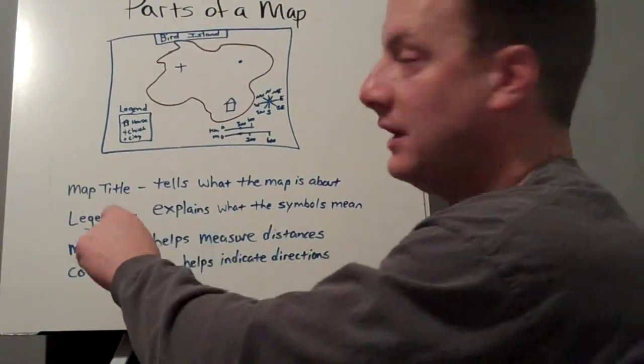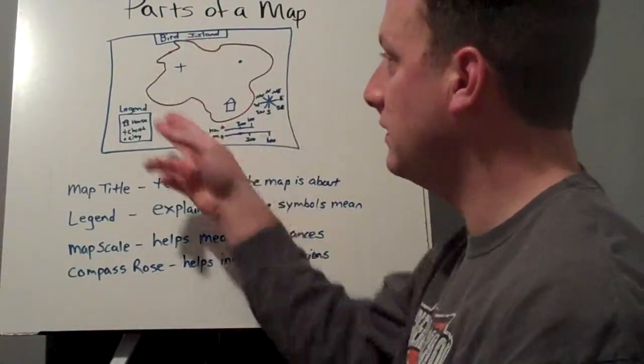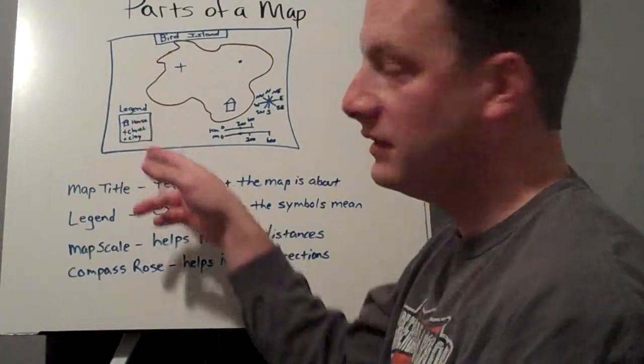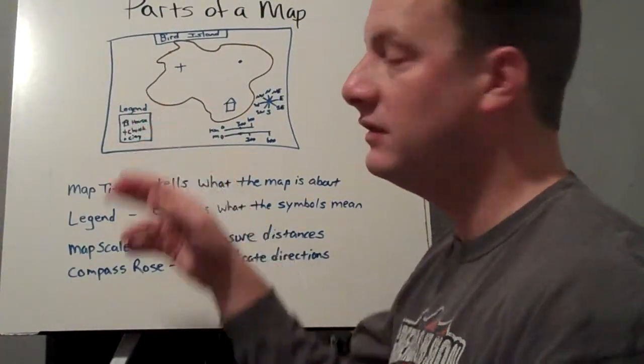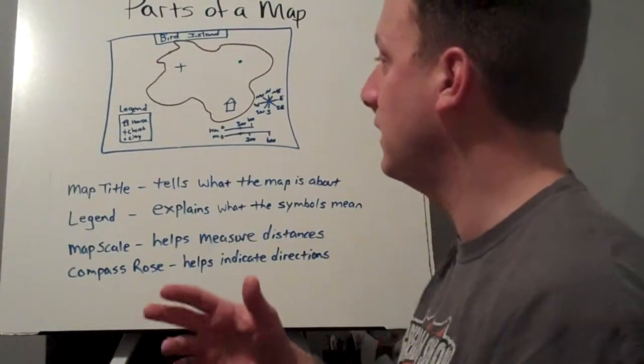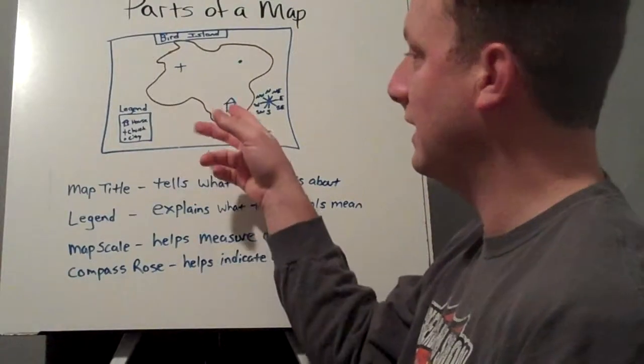They have to have a legend. Now this is sometimes called a map key. It's found in the corner, usually, of the map, and it has all the different symbols that you see on the map. They're going to be listed in the legend, and this helps us identify and learn what each symbol means.